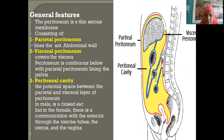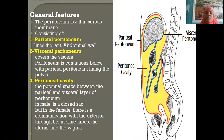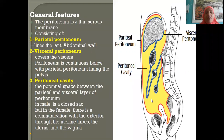Once the peritoneum covers the small intestines, it comes back to cover the posterior abdominal wall, then covers the rectum, the uterus, and the urinary bladder, before returning to its point of origin at the umbilicus. We started our journey at the umbilicus and saw the peritoneum covering each visceral organ and coming back — this is the vertical tracing of the peritoneum.